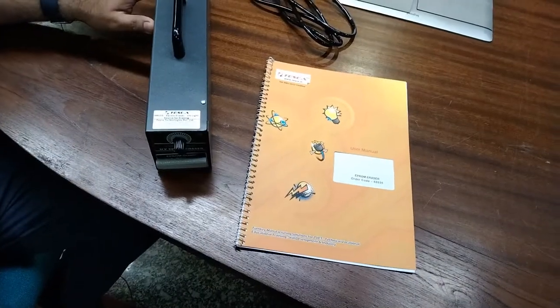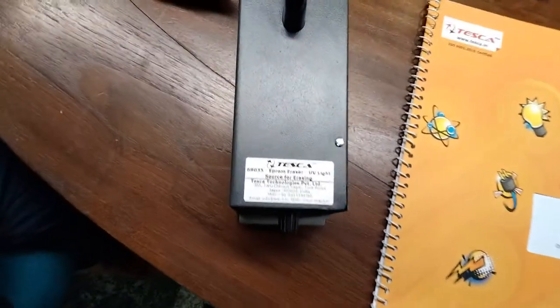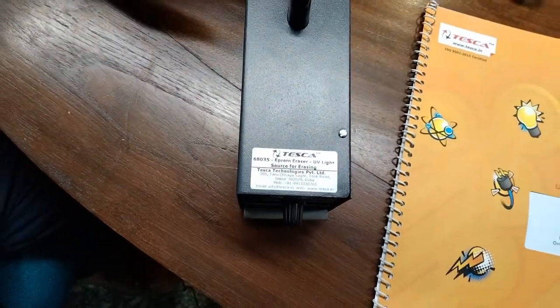This is the EPROM Eraser device and the order code for this EPROM Eraser is 68035. You can use this order code to check the queries and specs about this product.